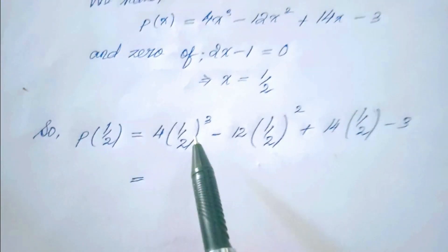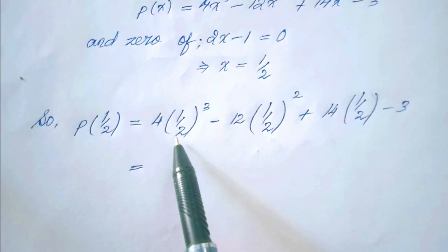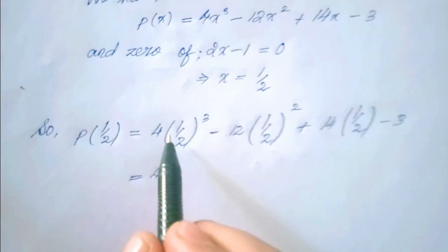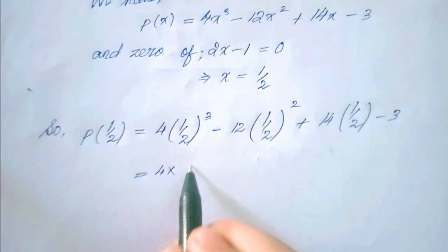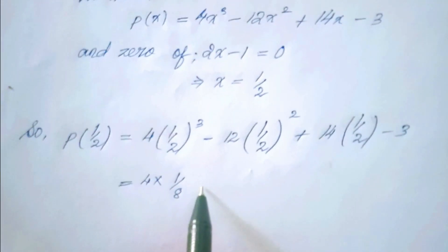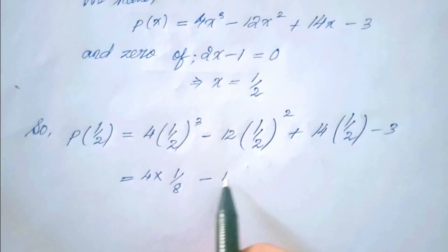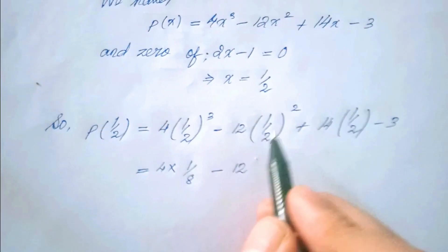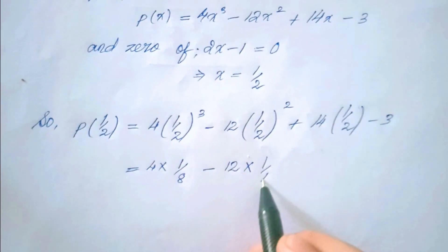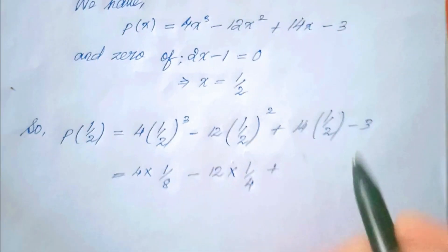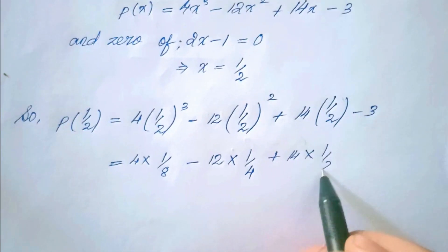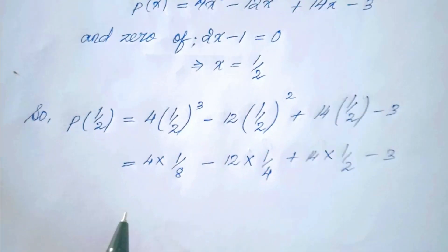P of 1/2 is equal to: substituting x = 1/2, we get 4 into (1/2) cubed minus 12 into (1/2) squared plus 14 into (1/2) minus 3.